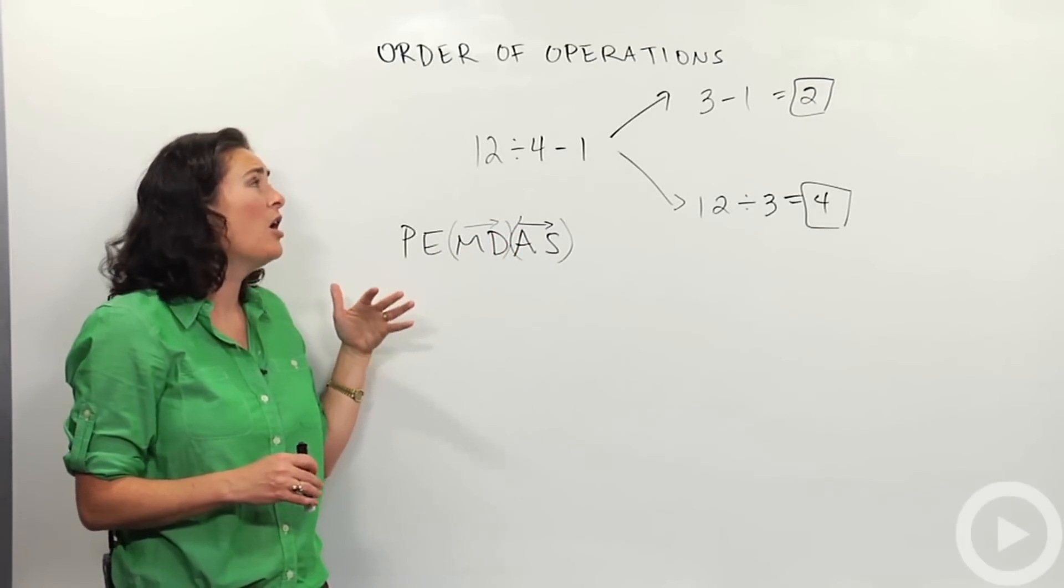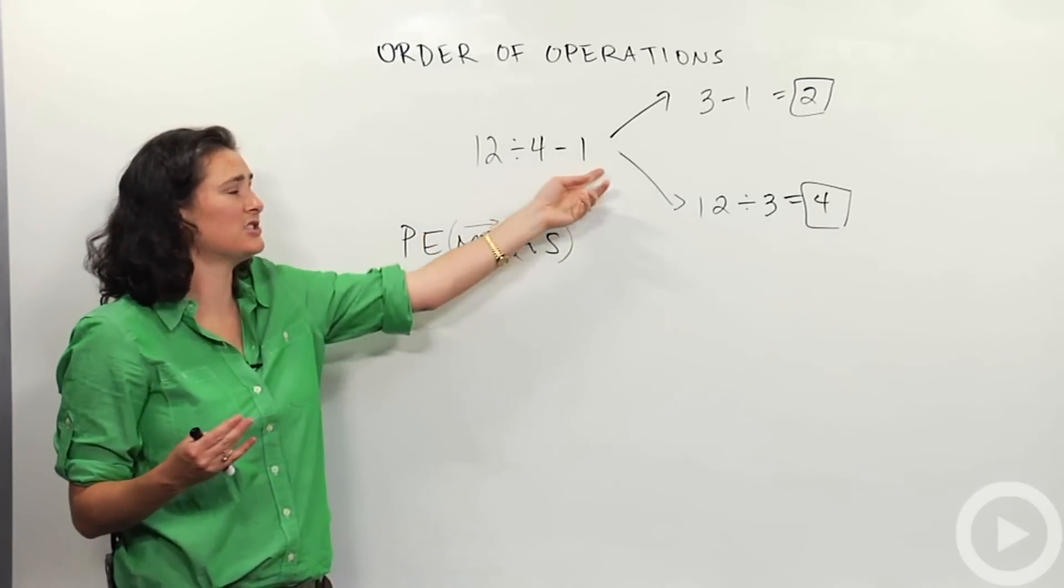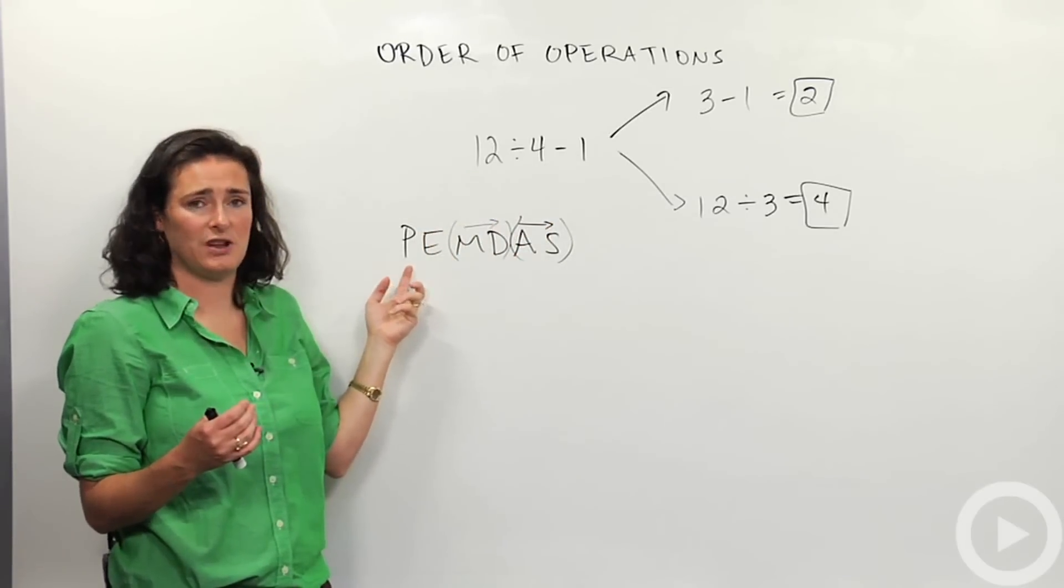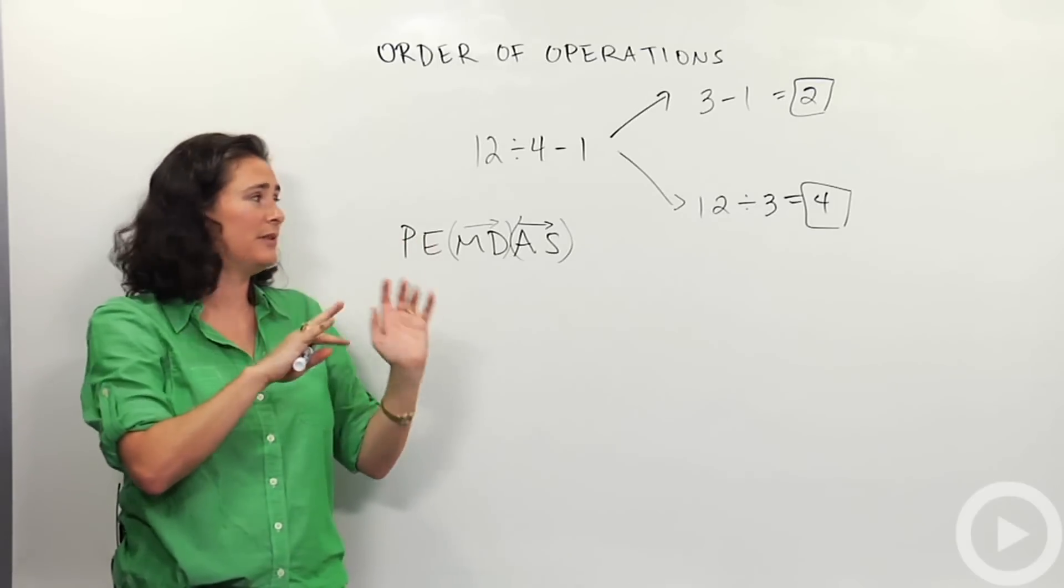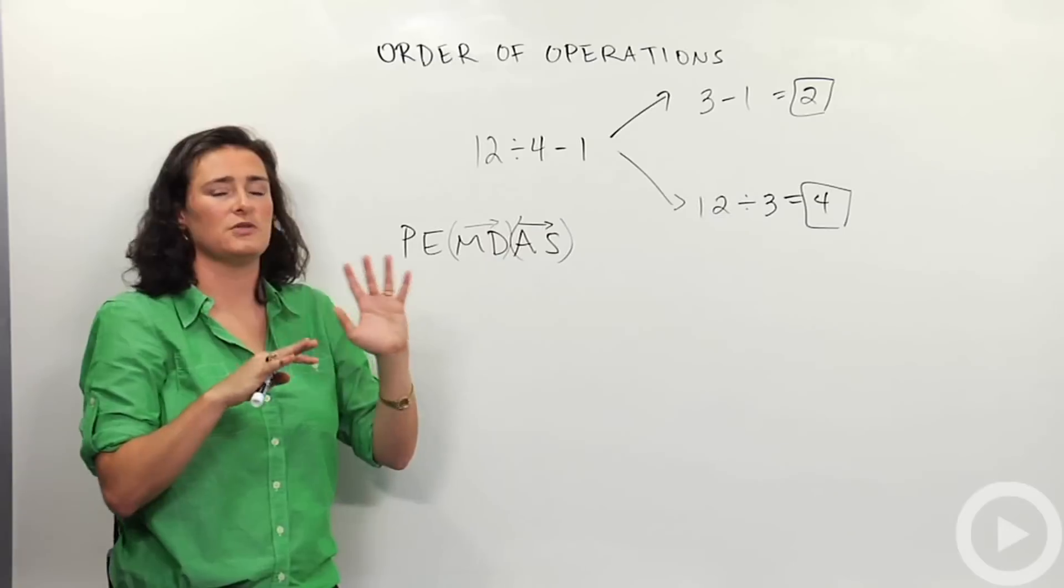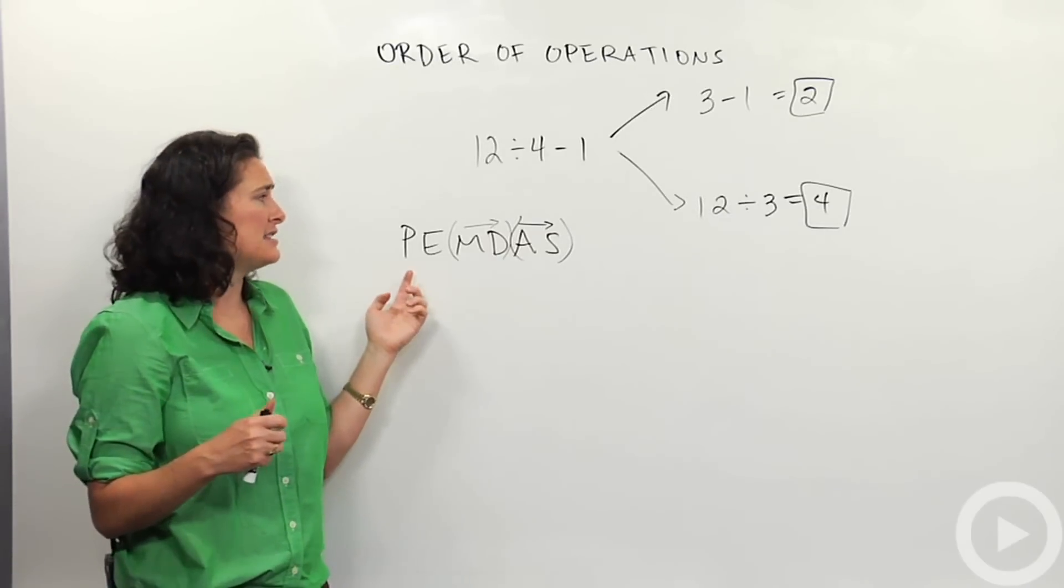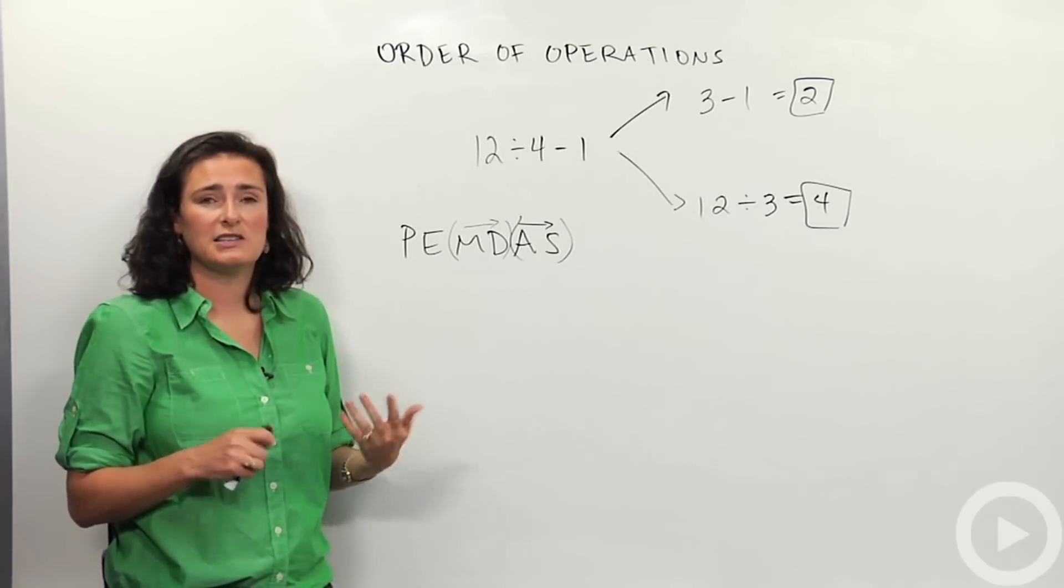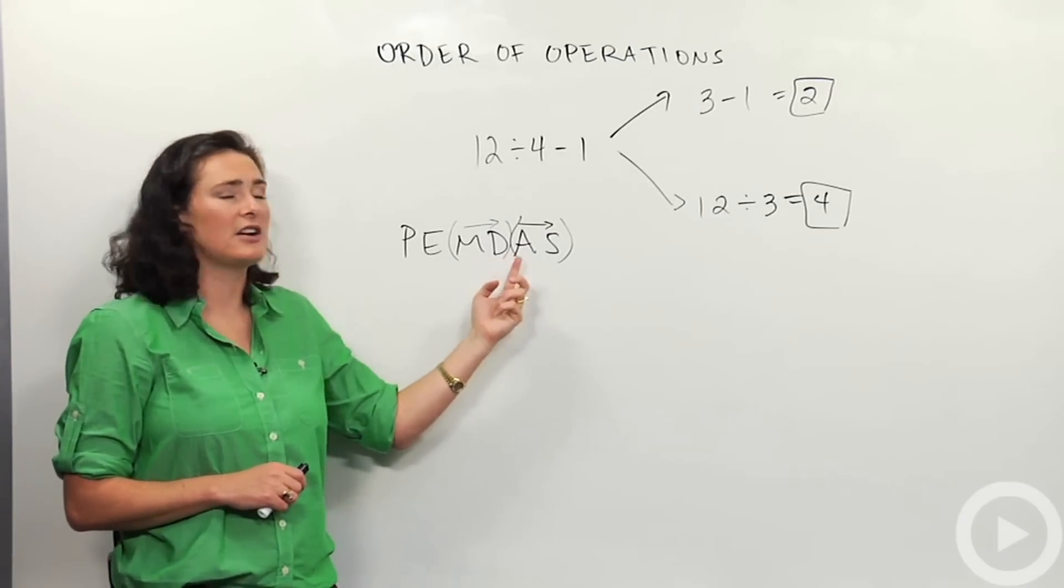So again, order of operations is the way we've agreed to solve or simplify expressions like this. We do groupings parentheses first, exponents, then moving from left to right, we do any dividings or multiplings. Moving from left to right, we do any addings, subtractings. And the way people remember or memorize this is often the acronym PEMDAS or using the words, please excuse my dear Aunt Sally.